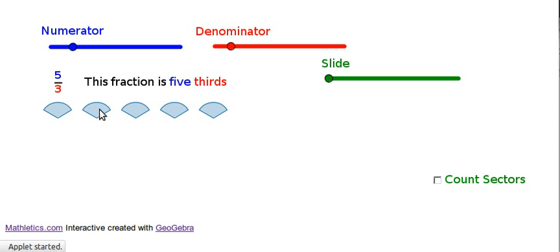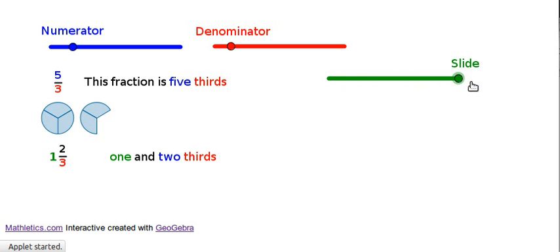You are just thinking about 5 thirds as 5 individual thirds, but if you line them up or rearrange them in a different way, you can see that this number, this 5 thirds, is the same as 1 and 2 thirds.